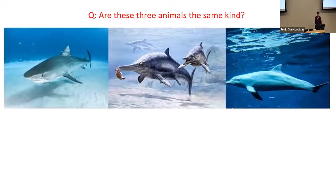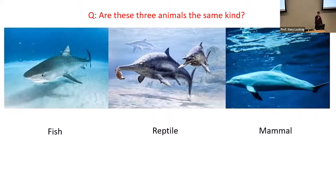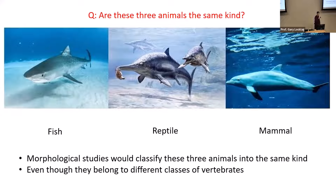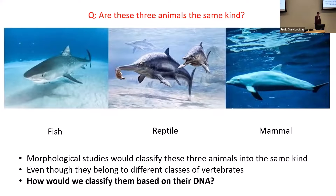Revisiting a picture from the previous talk: a fish (shark), a reptile (ichthyosaur), and a mammal (dolphin). Morphological studies could classify these three animals into the same kind based on superficial similarities, even though they are different classes of vertebrates. Since the kind level is around the family, the question is how would we classify these organisms based on their DNA — perhaps DNA is the key to better classification.